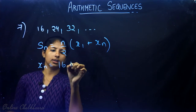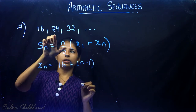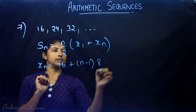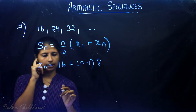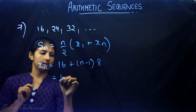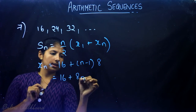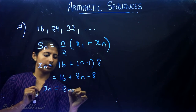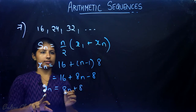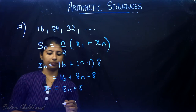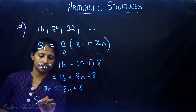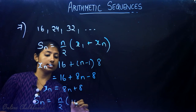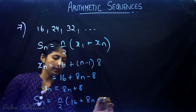We need to express the last term. The nth term is xn equals 8n plus 8. With first term 16 and nth term 8n plus 8, we can now calculate the sum.